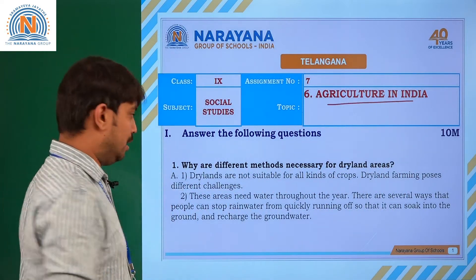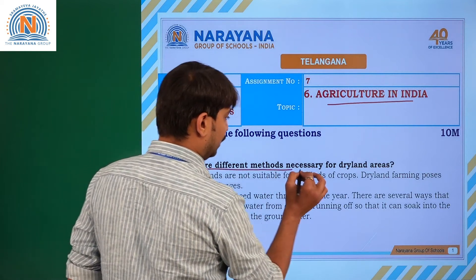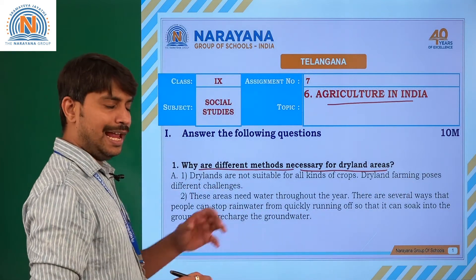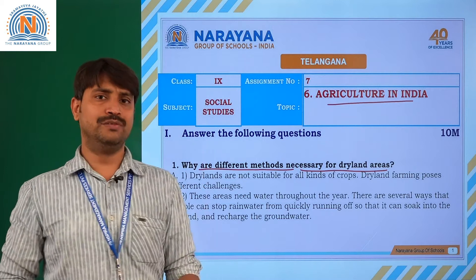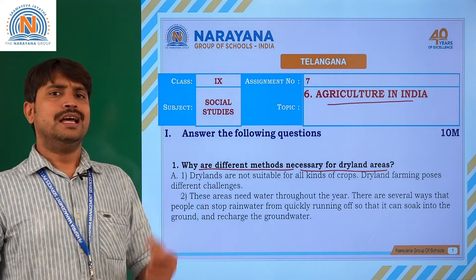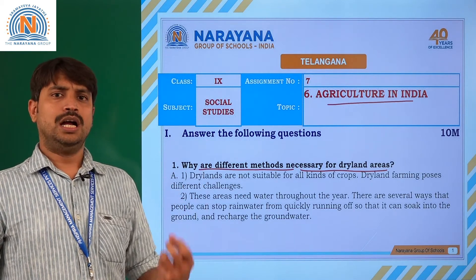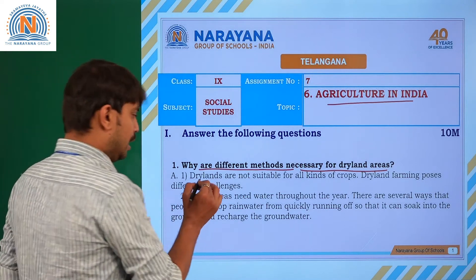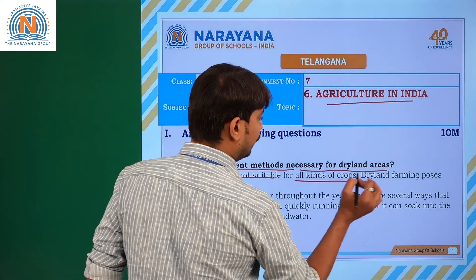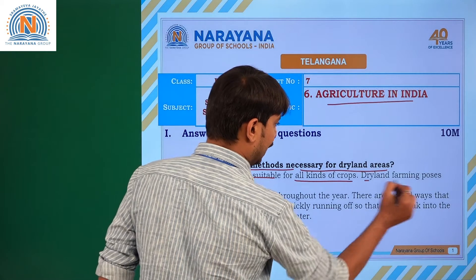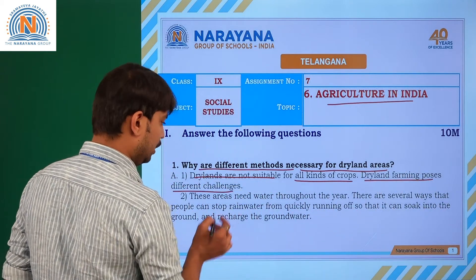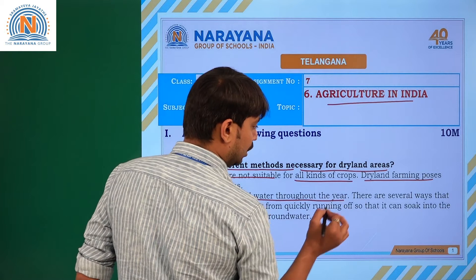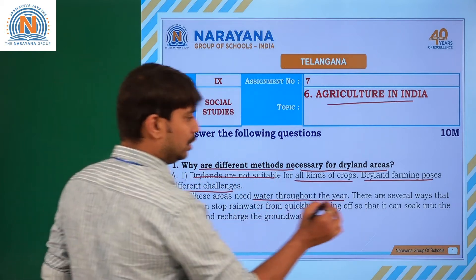Coming to the first question: why are different methods necessary for dry land areas? In the name itself we can recognize that there is less availability of ground water and less rainfall. Dry lands are not suitable for all kinds of crops, and dry land farming possesses different challenges. These areas need water throughout the year.